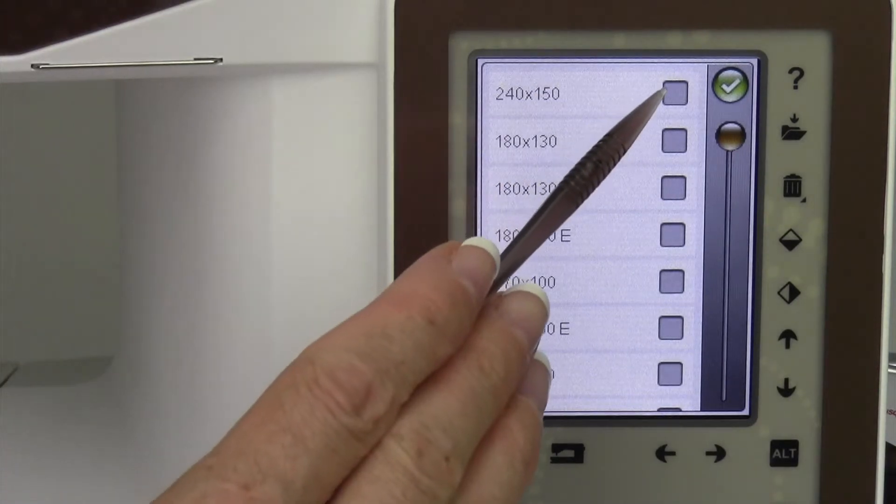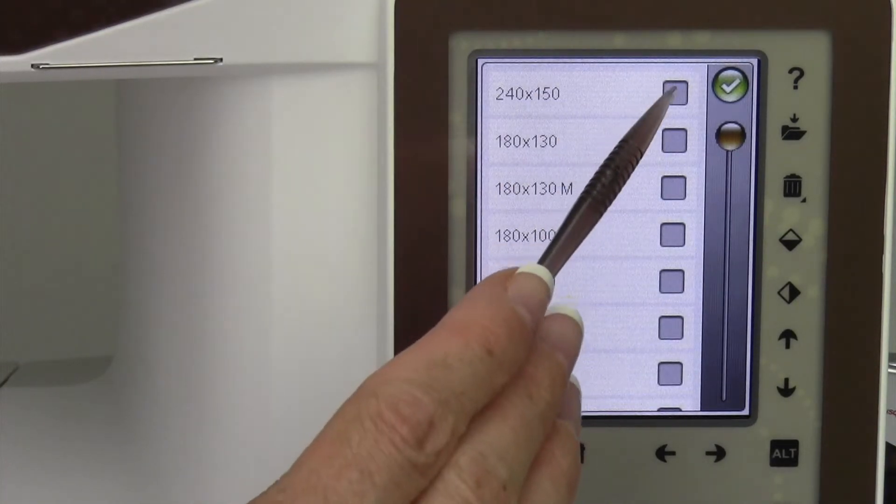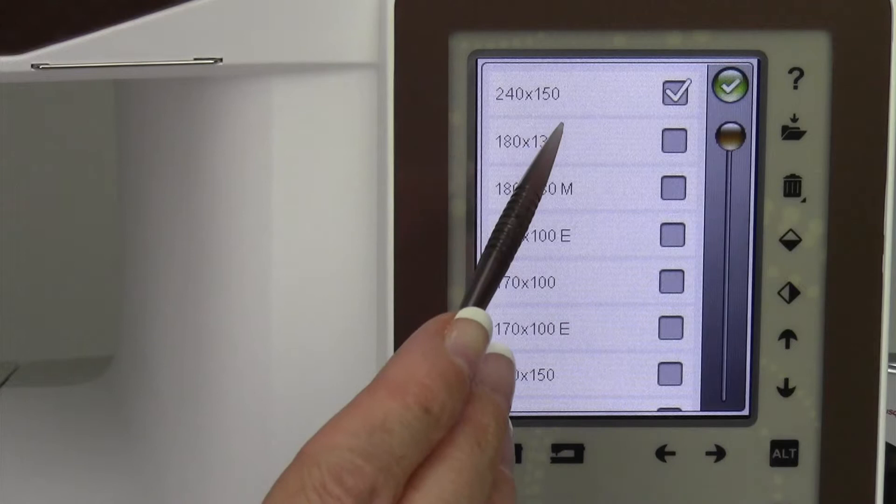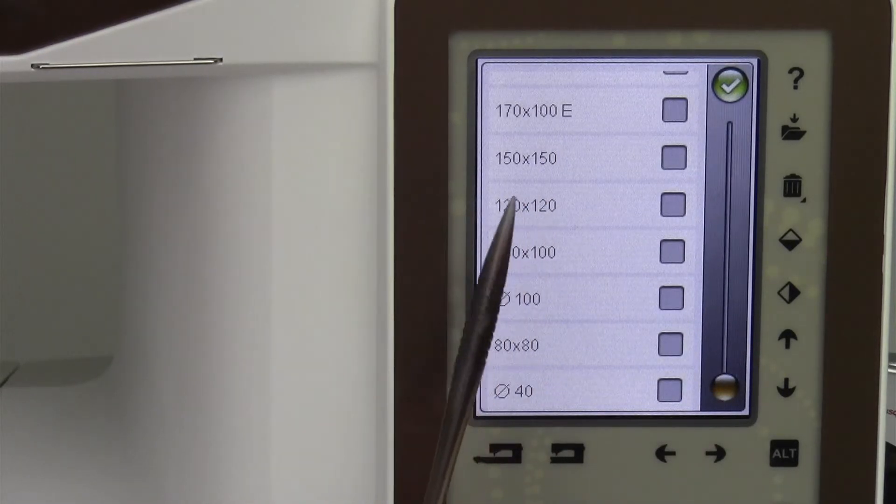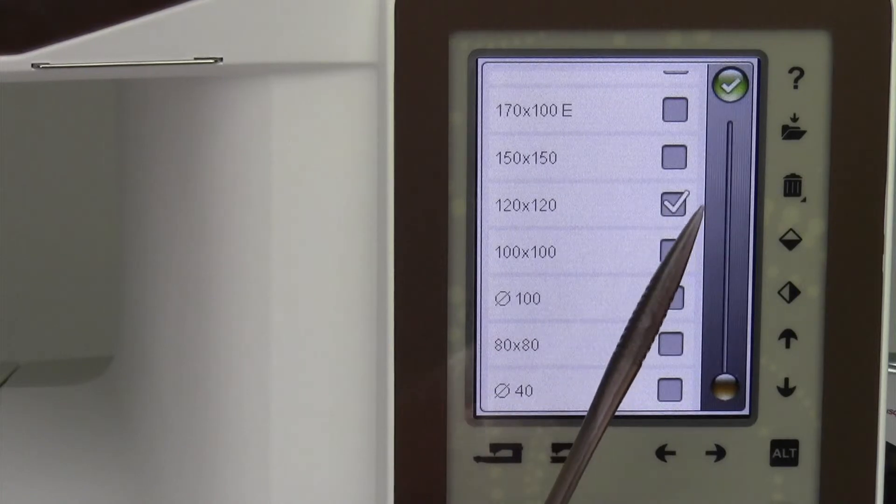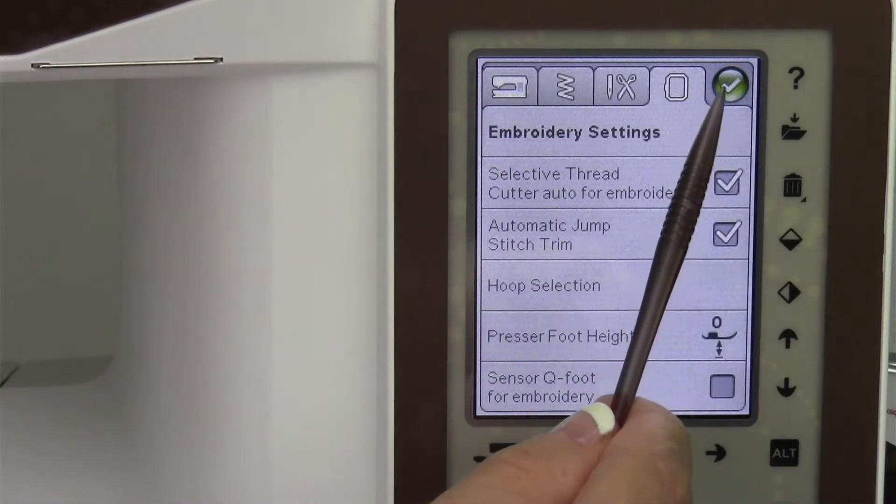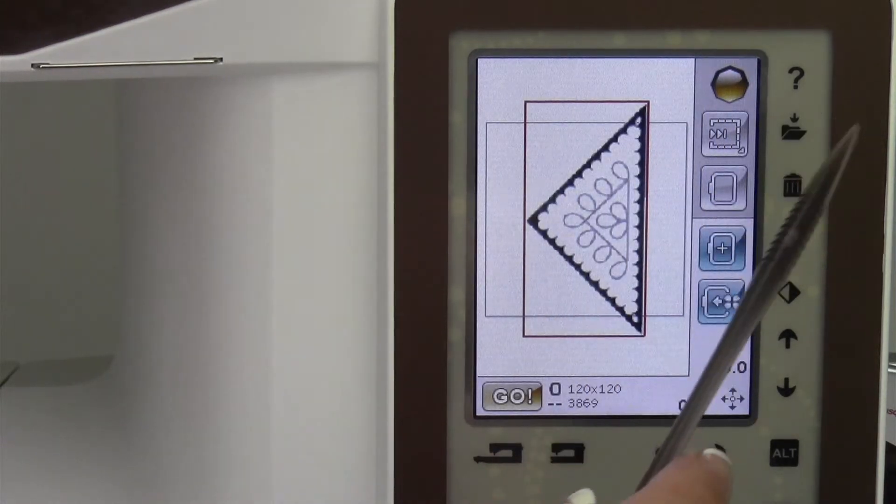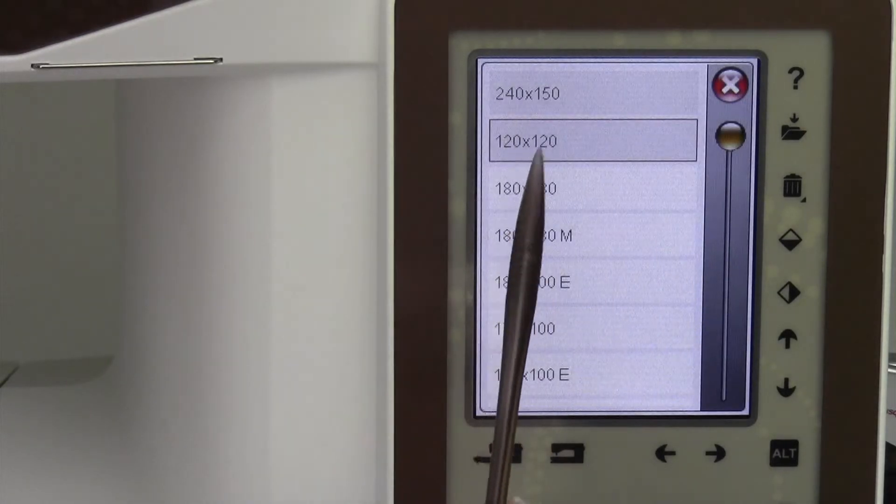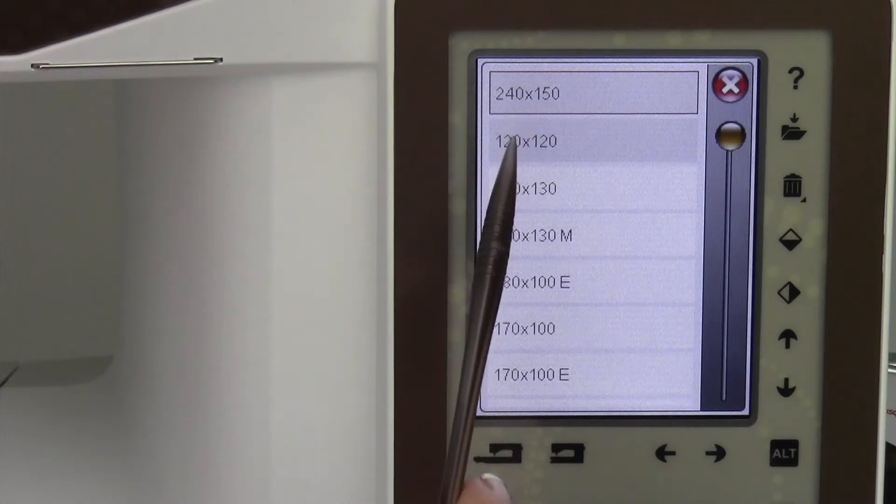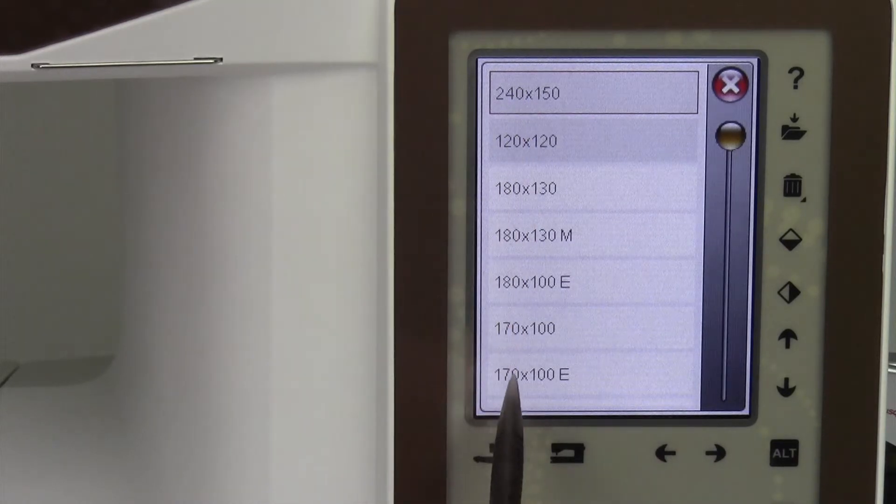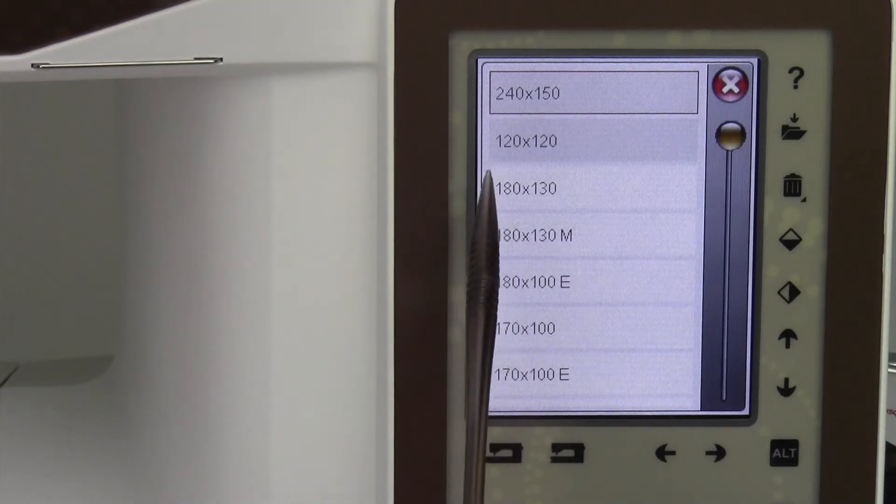You can actually tell the machine which hoops you own by checking the box. You have the 240 by 150, that's the one that came with it, and let's just go ahead for fun, check the 120 by 120. When we go ahead and pick designs, those particular hoops are going to show at the top of your hoop list. It's really easy to get to those top two, and the machine will not pick any of these other hoops.